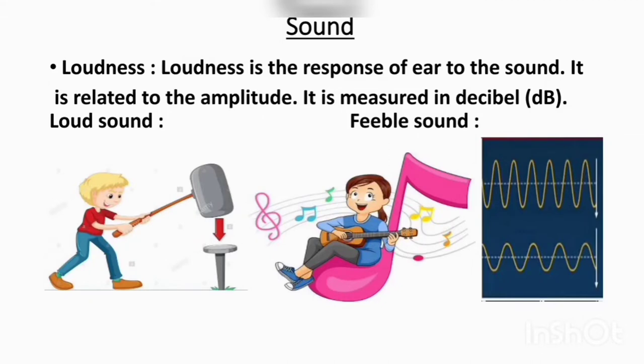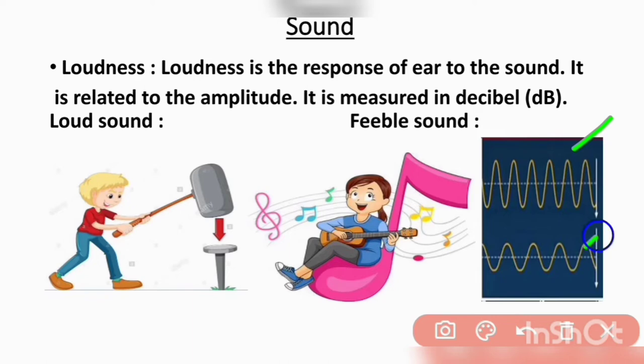Next is loudness. Loudness is the response of the ear to the sound. It is related to amplitude — loudness is proportional to the amplitude of the vibrating body producing the sound. Higher the amplitude, louder the sound we get. Similarly, lower amplitude means fainter sound is produced.